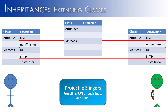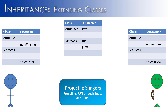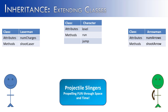We could create a third class called the Character class, which contains the attributes and methods common to both Laser Man and Arrow Man — that would be level, run, and jump. Once consolidated, Laser Man only contains what's specific to him: how many laser charges he has and the action of shooting his laser. Same with Arrow Man: how many arrows he has and the action of shooting. The common attributes and methods are placed in the Character class that both can access. If we wanted to add another character that runs, jumps, and has a level, it too could use the Character class.